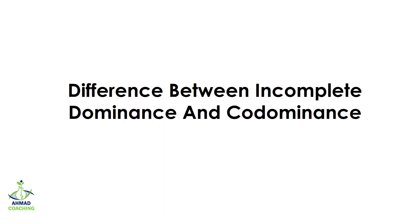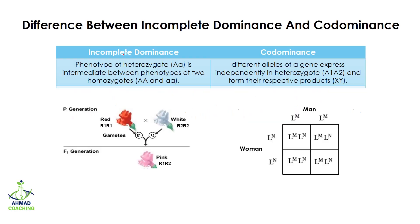Hello and welcome to Ahmed Coaching. I'm your teacher Dr. Anam. Today we will study the difference between incomplete dominance and co-dominance. In case of incomplete dominance, the phenotype of the heterozygote is intermediate between the phenotype of the two homozygotes. The heterozygote has two different alleles, so instead of one dominant and one recessive, both alleles express in an intermediate situation.